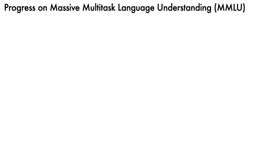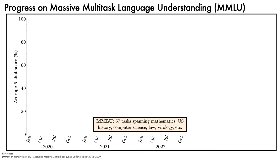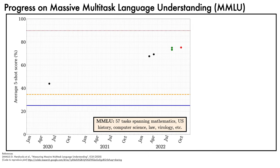To give a sense of the significance of the results, we'll look at progress on the challenging Massive Multitask Language Understanding, or MMLU, benchmark of 57 tasks spanning mathematics, US history, computer science, law, virology and many other domains. On the x-axis, we have dates spanning from early 2020 up until now. On the y-axis, we have average 5-shot score. Here is the plot.